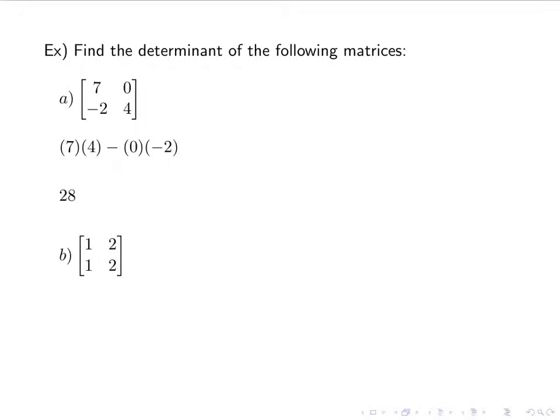Next, I have the determinant of the matrix 1, 1, 2, 2. I plug it in and get 1 times 2 minus 2 times 1, and I end up with 0, which is a perfectly normal determinant — I can get 0.